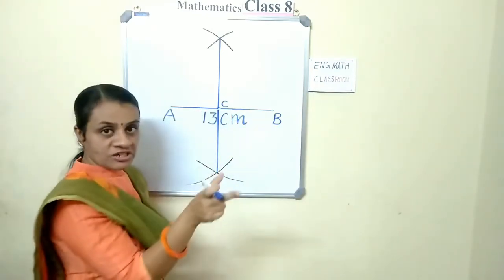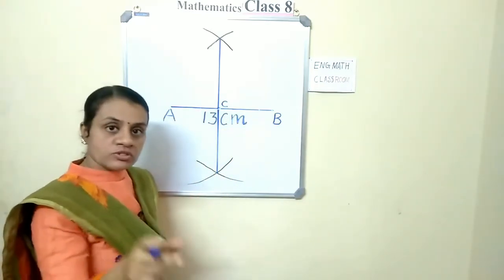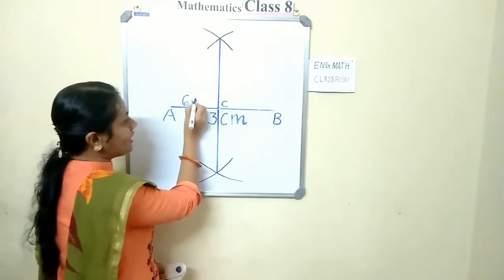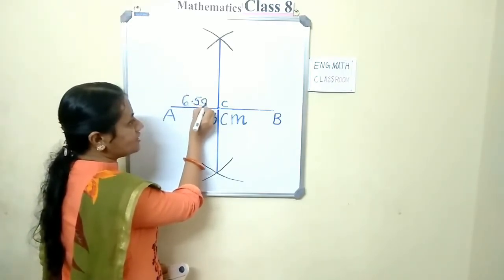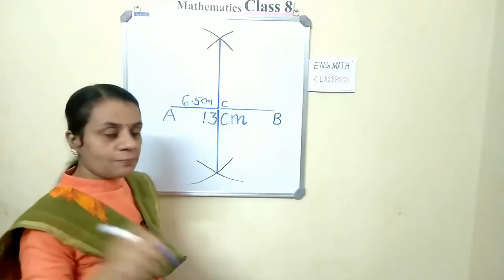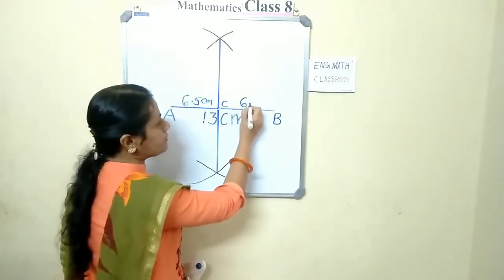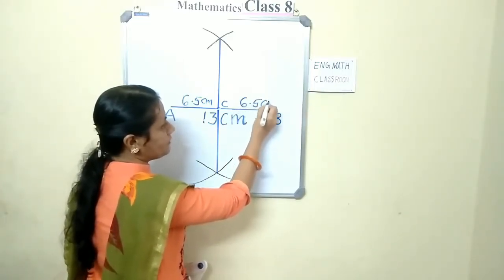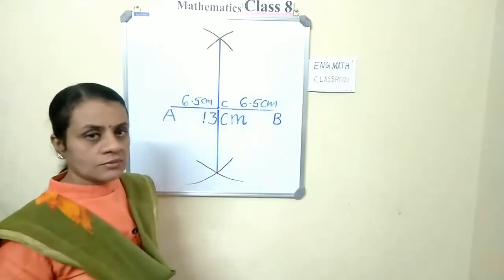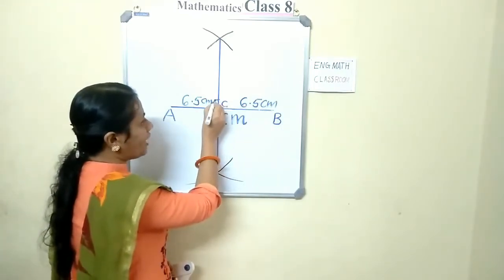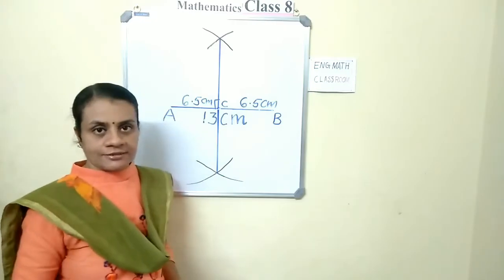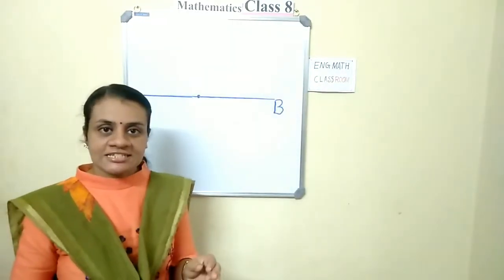And if you measure AC using ruler, you will get this length as 6.5 centimeters. And BC also 6.5 centimeters. You are making an angle 90 degrees.